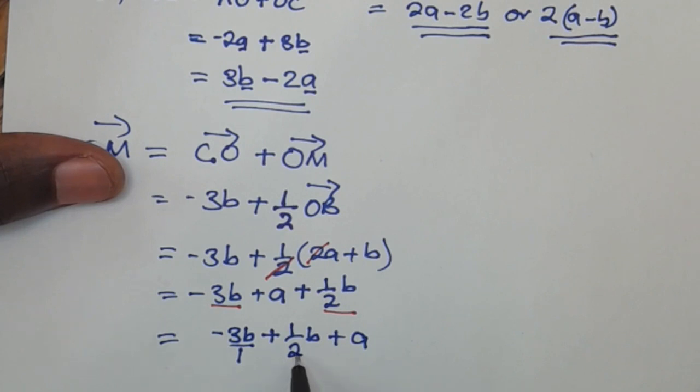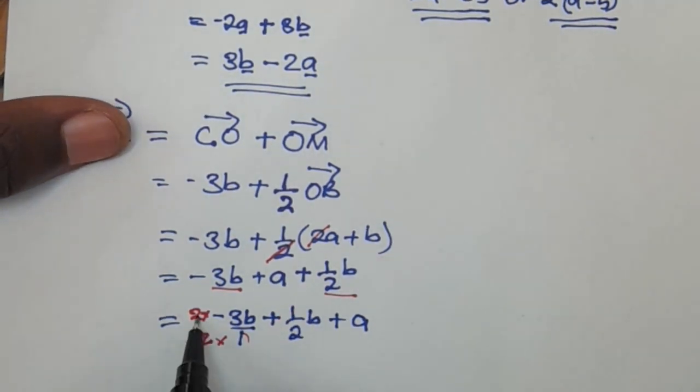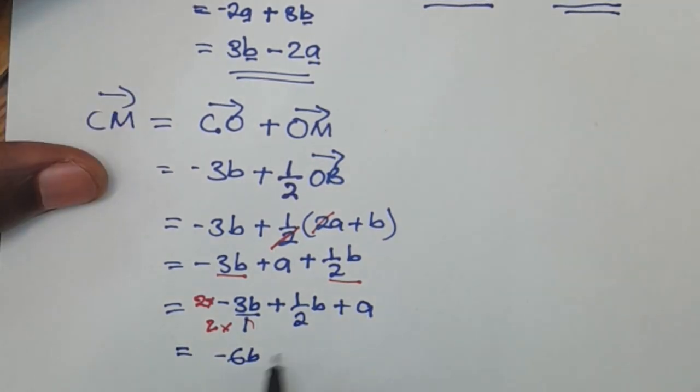The common denominator is 2, which means that we need to make this denominator as 2. So what we're going to do is we're going to multiply by 2. So what we've done on the denominator, we also do the same on the numerator so that we maintain the value. Now we're going to have 2 times 3b, we have negative 6b over 2 plus half b plus a.